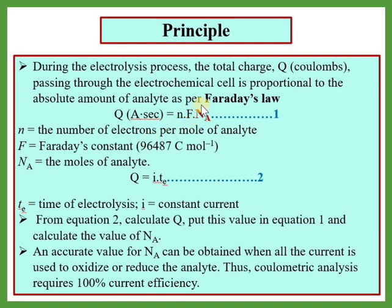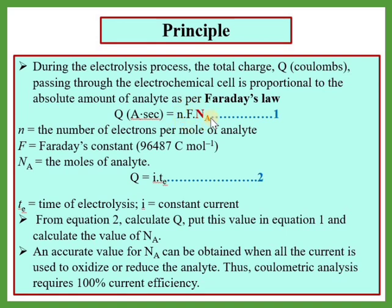N means the number of electrons per mole of analyte. Capital F means Faraday's constant, which is 96,487 Coulombs per mole. N represents the moles of analyte. So Q, in ampere-seconds, which is the total charge, is directly proportional to the absolute amount of analyte.